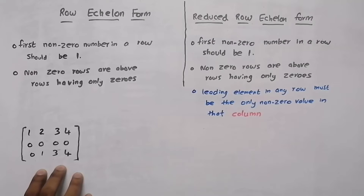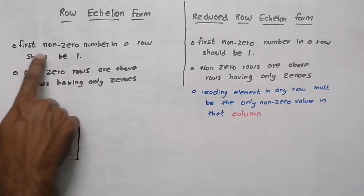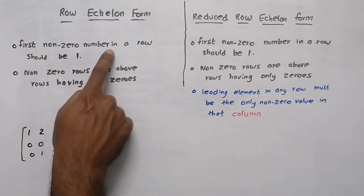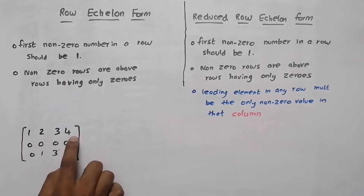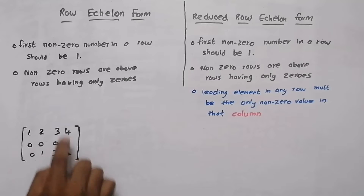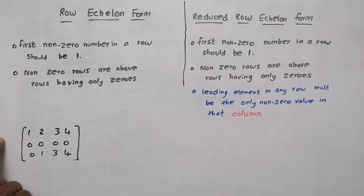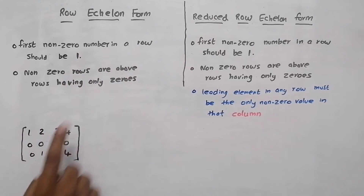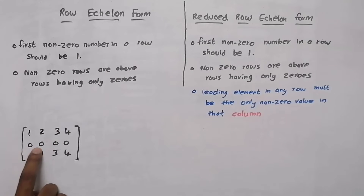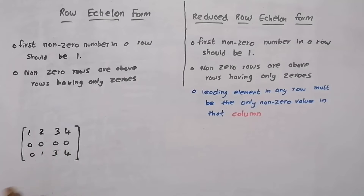So, first of all, when you get a question like this, the conditions for row echelon form: the first non-zero number in a row should be 1. This is row 1, this is row 2, and this is row 3. The first non-zero number here is 1, so the condition is satisfied. And in row 2, there are no non-zero values — all values are 0.